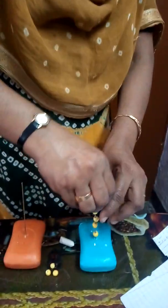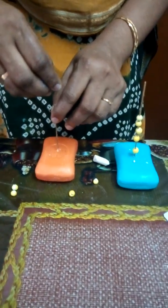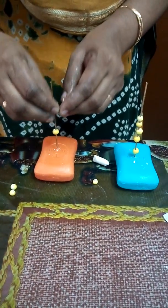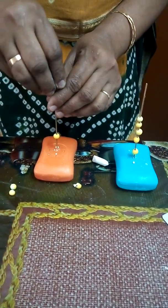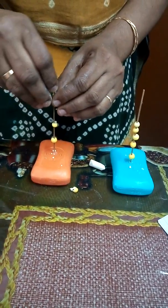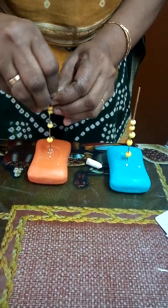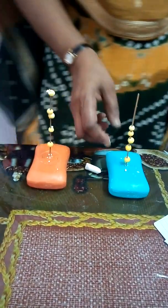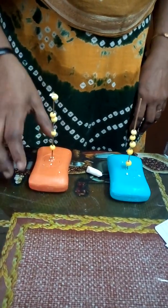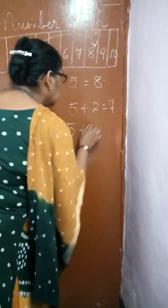Now, one more I will show you. 5 plus 5. Here already 5 are here, and one more I am showing you — 1, 2, 3, 4, 5. Then another 5. So, 5 plus 5 is equal to — what is the total number? Let's see: 5 plus 5.